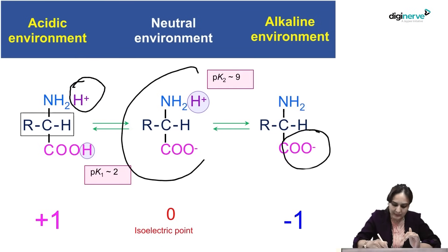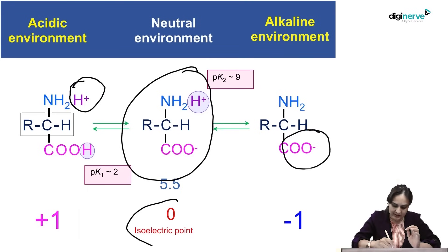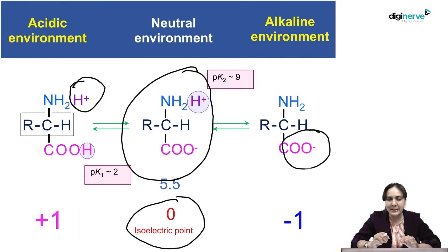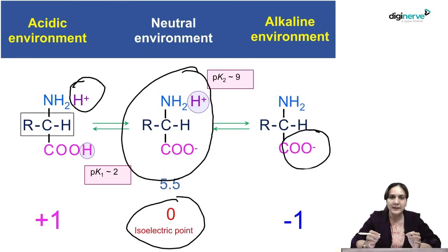At neutral environment — at isoelectric pH — the amino acid will have both positive and negative charges so that the net charge is zero. That point of pH is known as the isoelectric point, and the amino acid carrying both positive and negative charges is known as a zwitterion such that the net charge is zero.